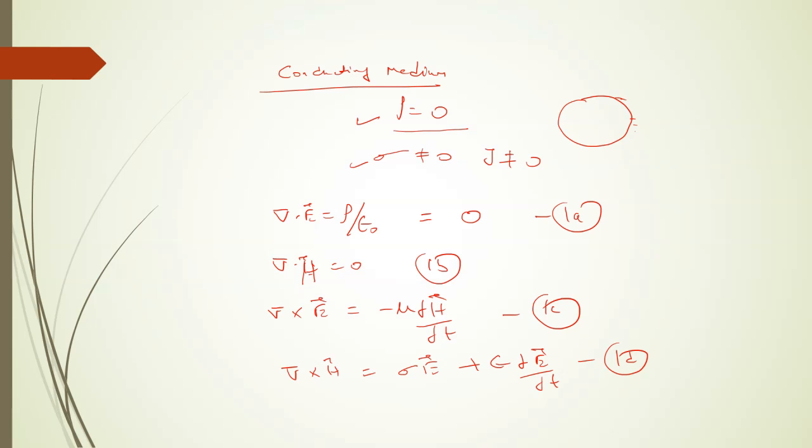We use the same steps as for the non-conducting medium. Take curl of equation 1c, Maxwell's third equation. Curl means del cross del cross E equals minus mu d by dt del cross H. Now apply standard vector identity, that is a proved result.